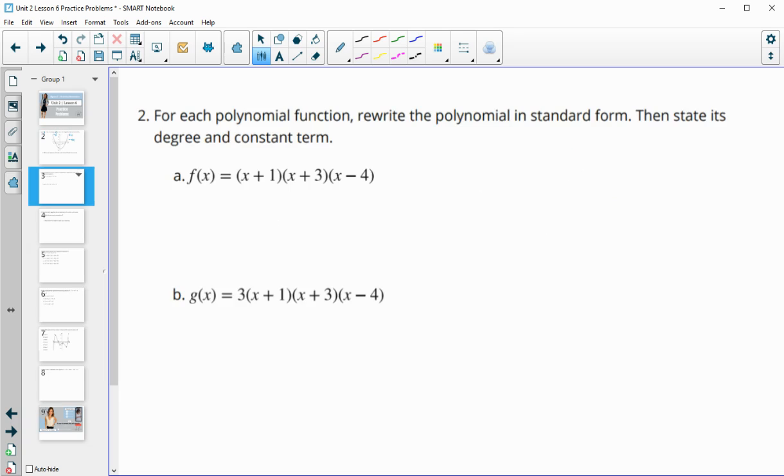Number two, for each polynomial function, rewrite the polynomial in standard form, then state the degree and the constant term. So we're multiplying together three binomials here. I'm going to multiply together the first two binomials by doing distribution or the FOIL method. So x times x is x squared. Then x times 3 is 3x, and 1 times x is 1x. So this 3x and 1x give us 4x. And then 1 times 3 gives us plus 3. So when we multiply together x plus 1 times x plus 3, we get x squared plus 4x plus 3. And then we still need to multiply that by x minus 4.